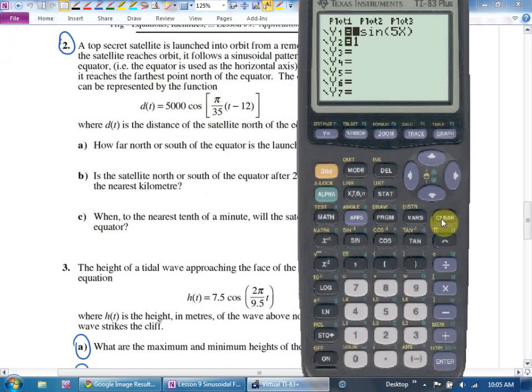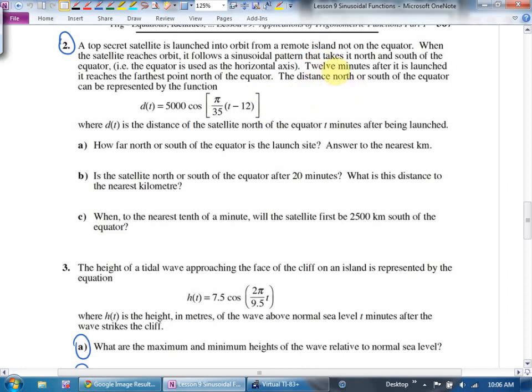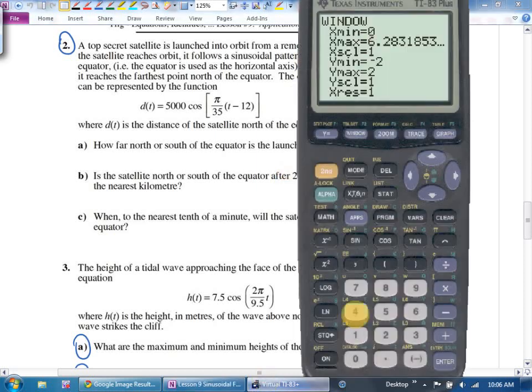Let's pick a good view window. Clear what I have here. Make sure I'm in radians. I am. And I'm going to go 5,000 cos pi over 35 times bracket x minus 12 close bracket. I think that's right. Two open brackets, two close. Yep.